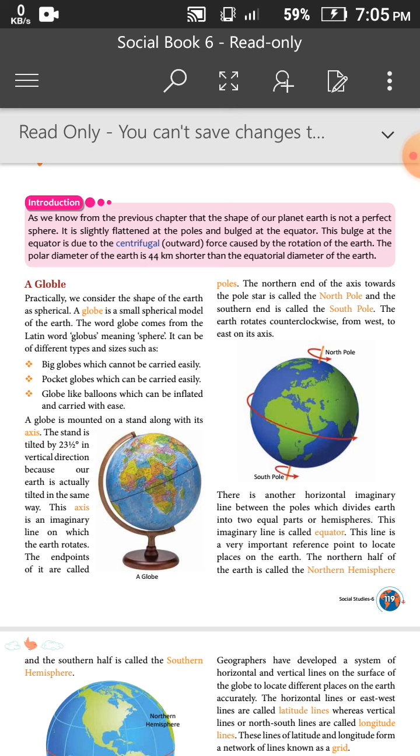There is another horizontal imaginary line between the poles which divides the earth into two equal hemispheres. This imaginary line is called the equator. In the center between the North Pole and South Pole, there is a line which divides the earth in two equal parts. This line is a very important reference point.